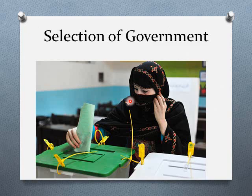For casting a vote, people stamp a paper to show who they want as a representative of their particular area. These people usually belong to a political party, and the party with the most people winning local elections runs the government. People stamp the paper to vote for their chosen candidates.